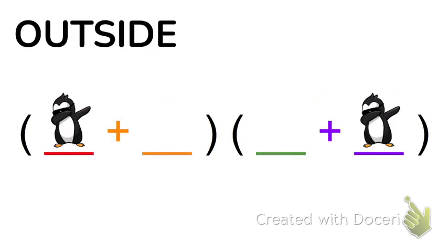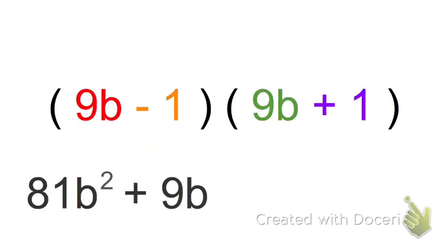The O stands for outside. So we're going to multiply the two numbers on the outside of each set of parentheses. So in this case, the 9b times the positive 1 gives us positive 9b.